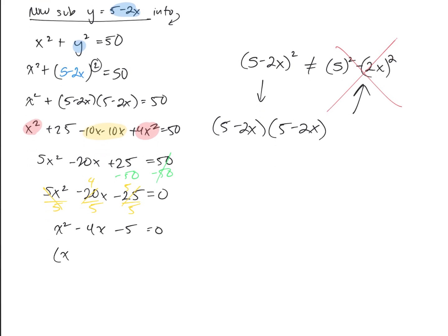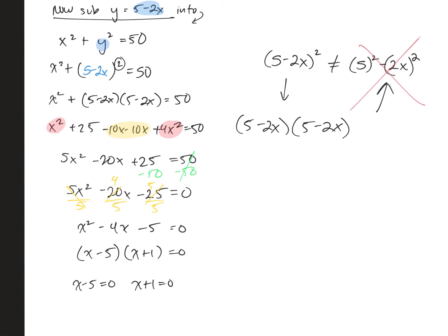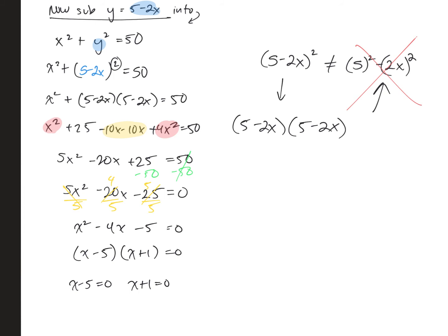Subtracting 50 from both sides to set it equal to zero, we notice all terms are divisible by 5 — simplify it. This gives x squared minus 4x minus 5 equals 0. Factoring: (x minus 5)(x plus 1) equals 0, so x minus 5 equals 0 and x plus 1 equals 0. Also note: the equal signs are in the middle of the equations — we don't write extra equal signs along the side, as that would be for expressions, not equations.